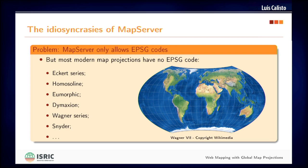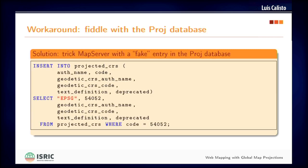In our case at ISRIC we work with MapServer. You have this real problem that if you don't have an EPSG code, MapServer is not going to serve your data at all. But this is where open source comes into play, because you can just open the hood and tinker with the engine.